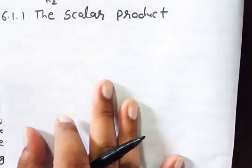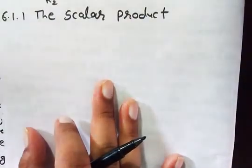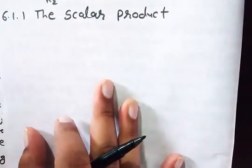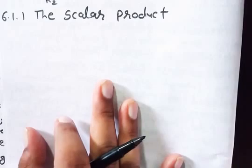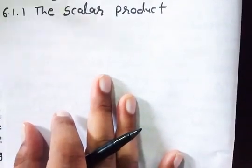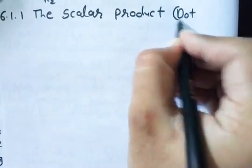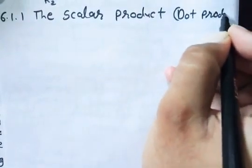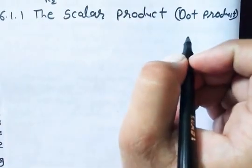So the scalar product will be between two vectors. When there is a scalar product between two vectors, it will give us a scalar. Or the other product, that is vector product, will be between two vectors. If there is a vector product between two vectors, it will give again one vector quantity. Scalar product has another name - we can call it dot product.